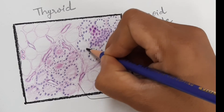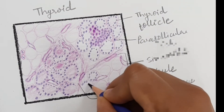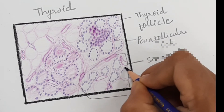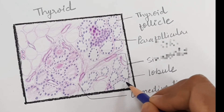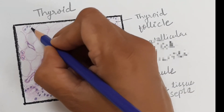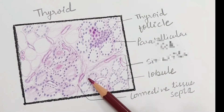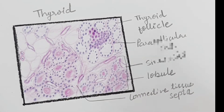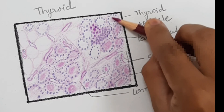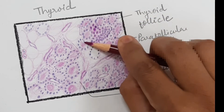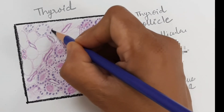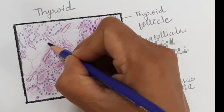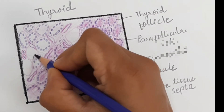The thyroid follicle secretes thyroglobulin, and the thyroid hormone takes up iodide from the circulating blood. This iodide is oxidized by peroxidase into iodine, and the iodine molecule binds with the tyrosine molecule of thyroglobulin. When three iodine atoms bind with the thyroglobulin tyrosine molecule, it forms triiodothyronine (T3), and when four iodine molecules bind, it forms tetraiodothyronine (T4).